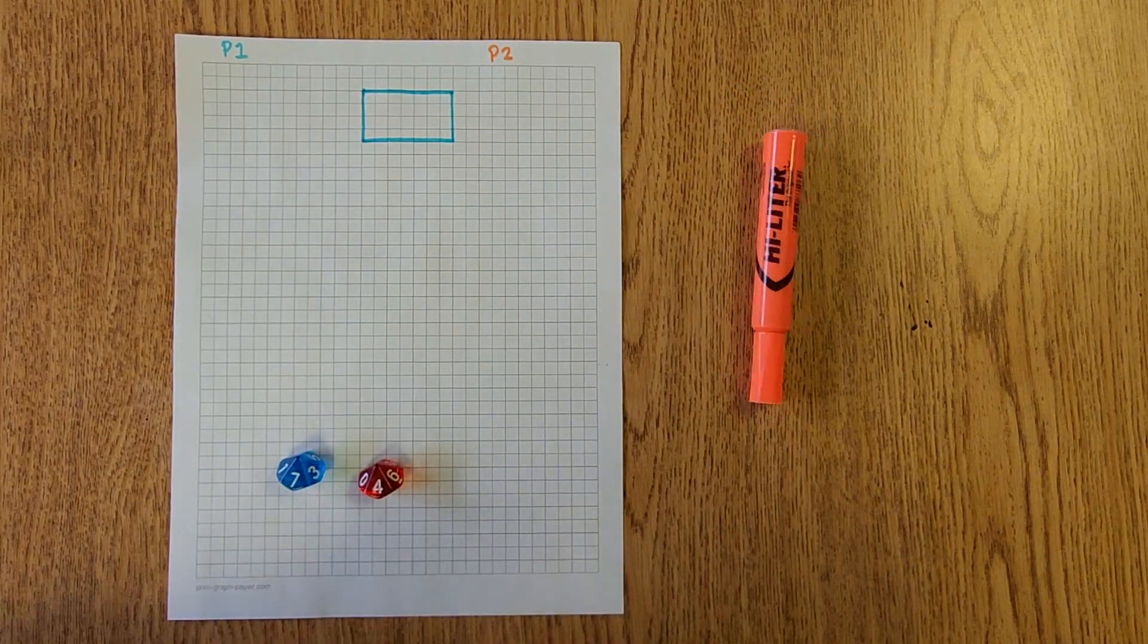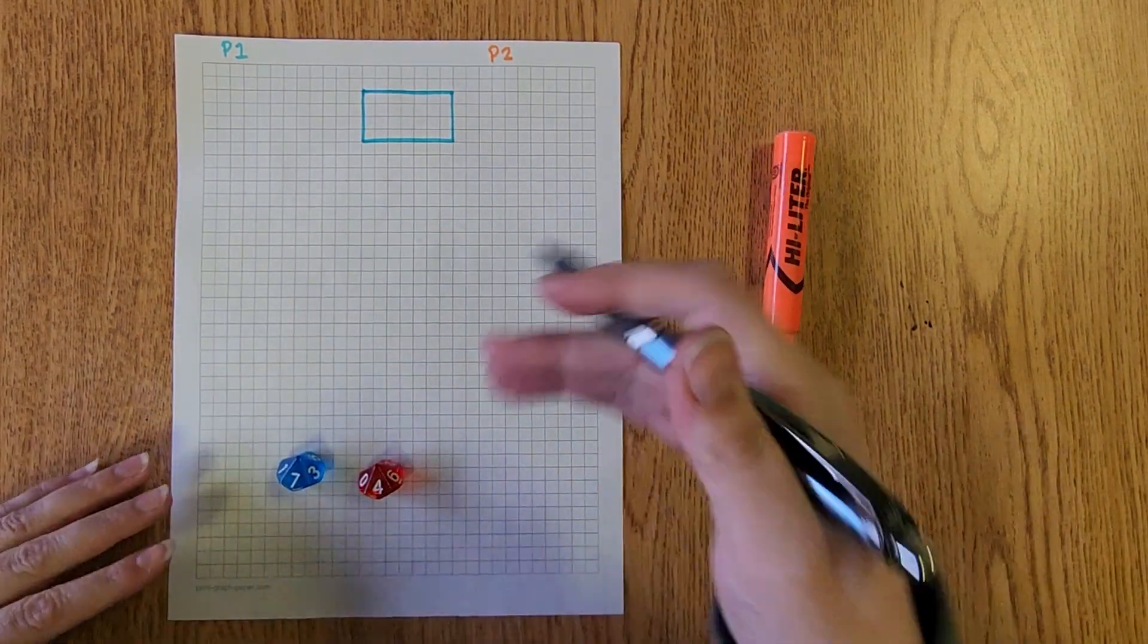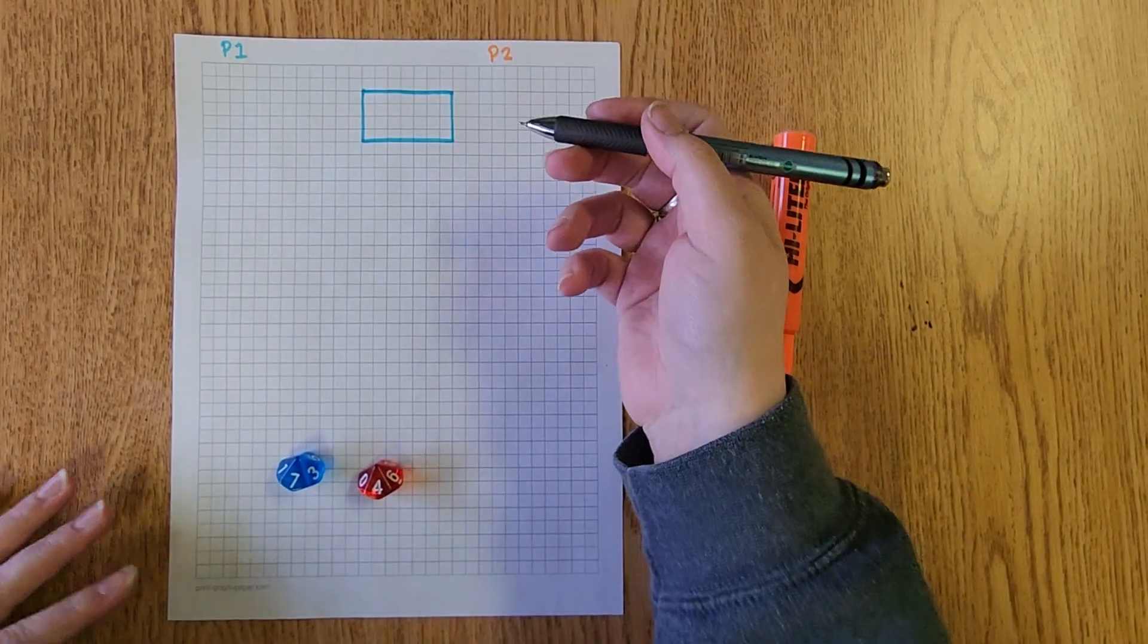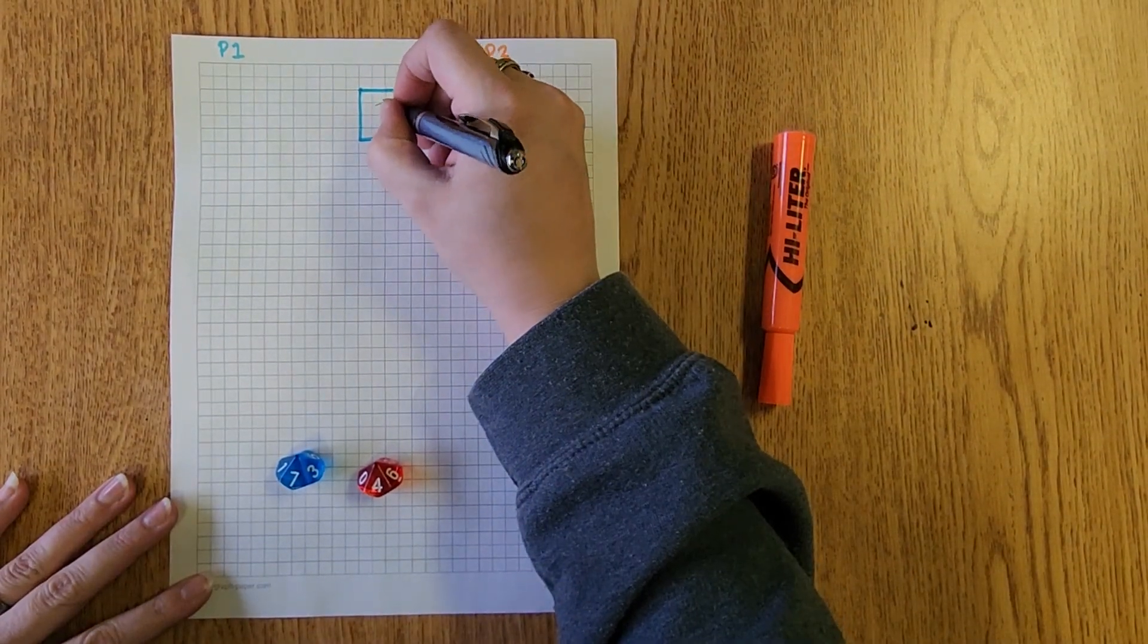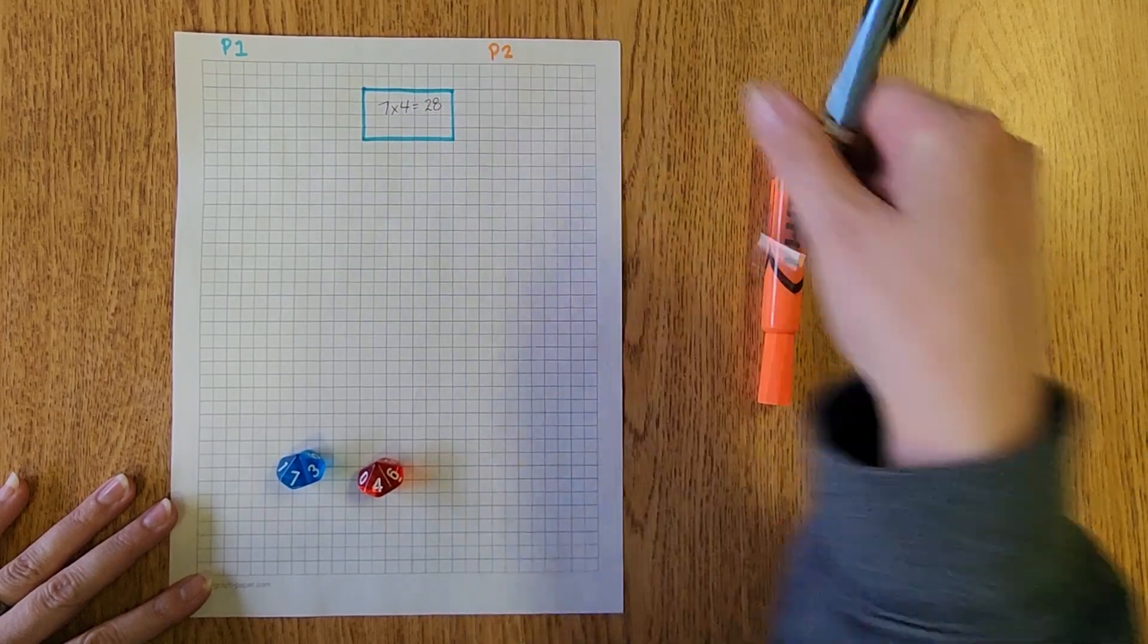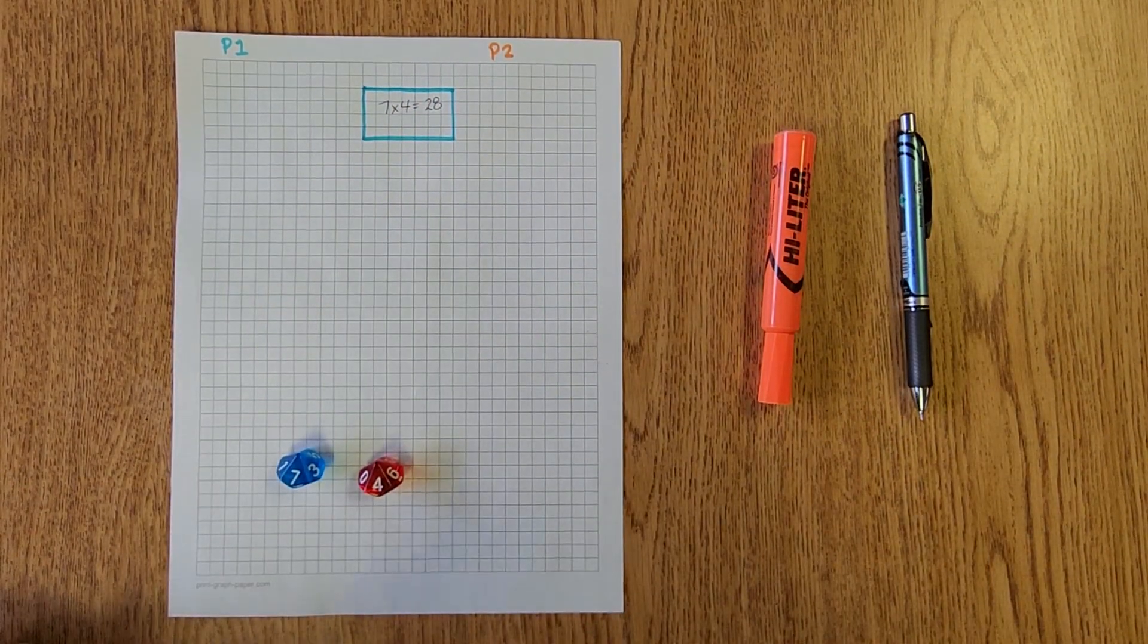This is the area of that box. The student's next job is to indicate the response to the multiplication question or the area of the space. So seven times four makes 28. This is their location they've claimed.